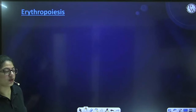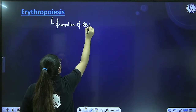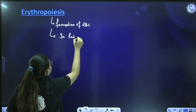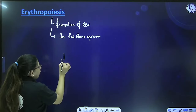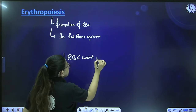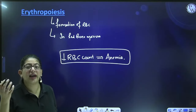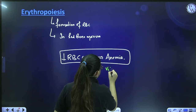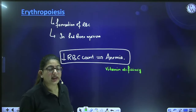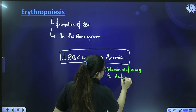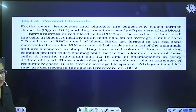Erythropoiesis — formation of RBCs — occurs in the red bone marrow. If RBC count is low, the condition is called anemia. The cause of anemia can be vitamin deficiency (especially B12 and B9) or iron deficiency.